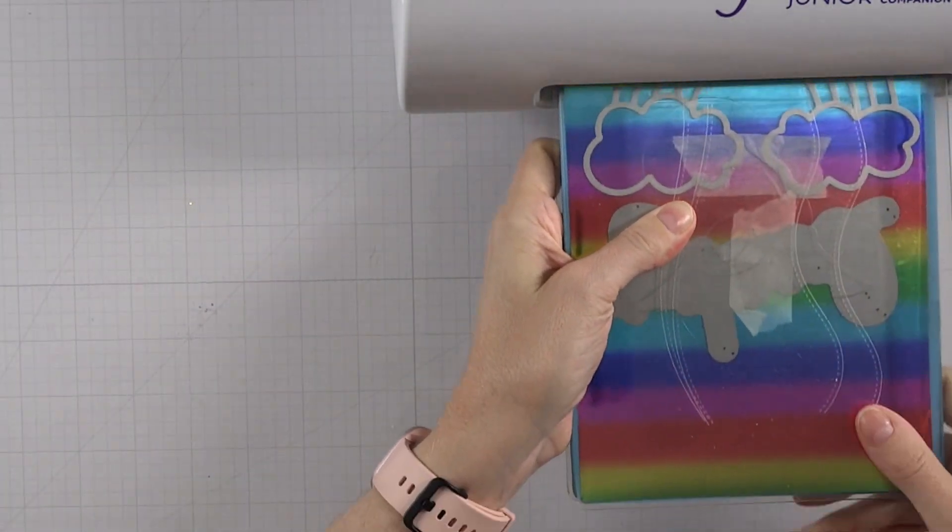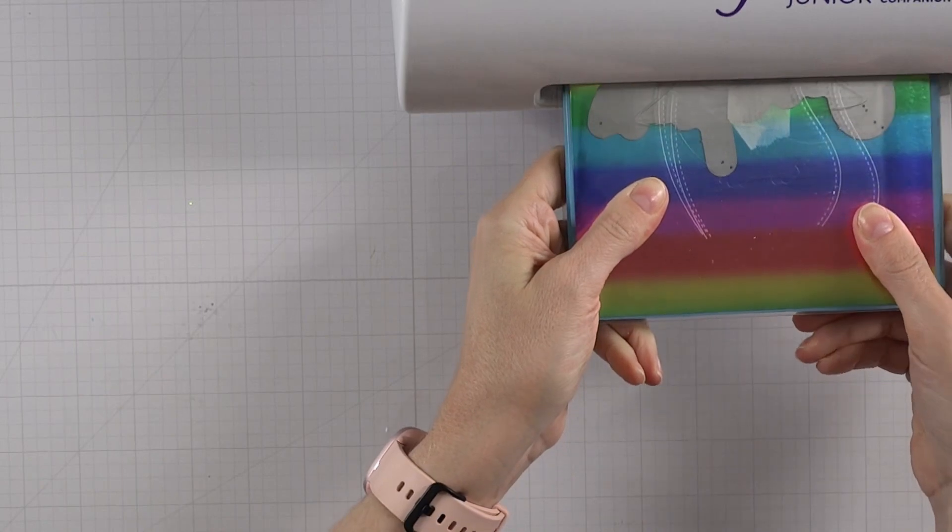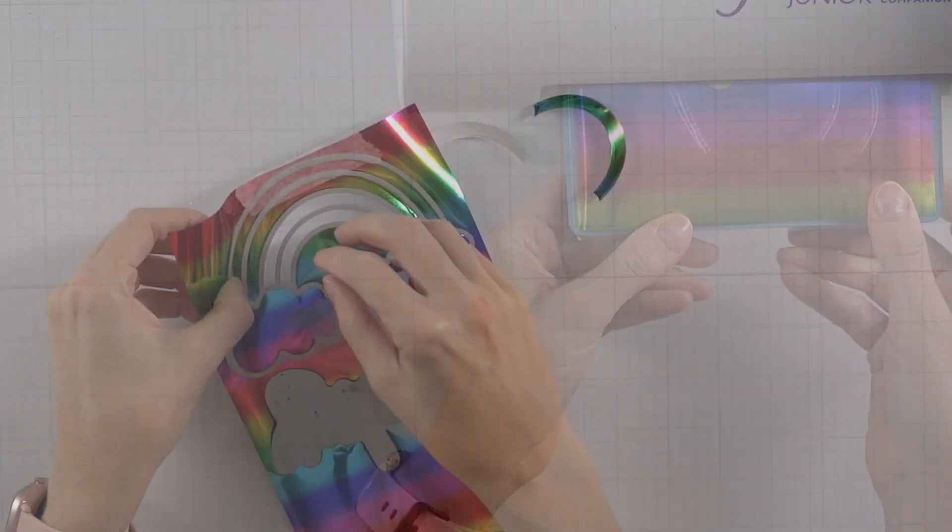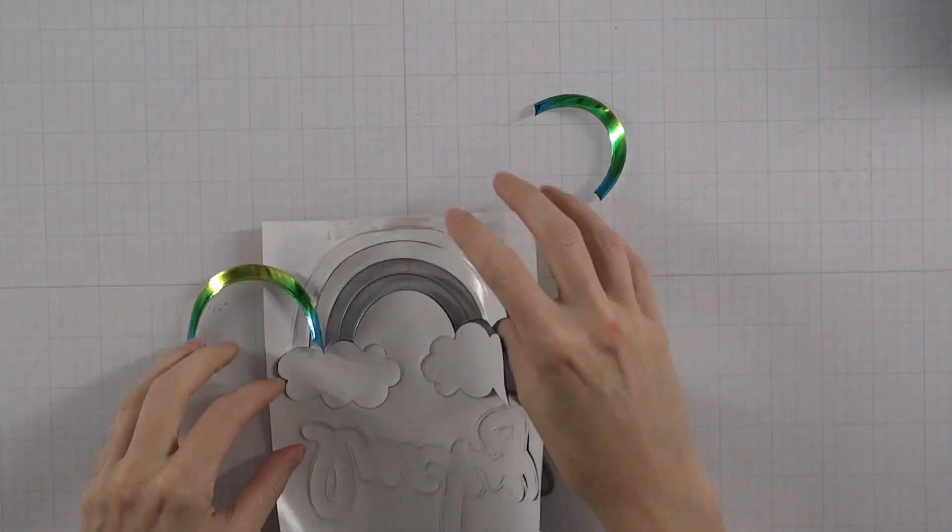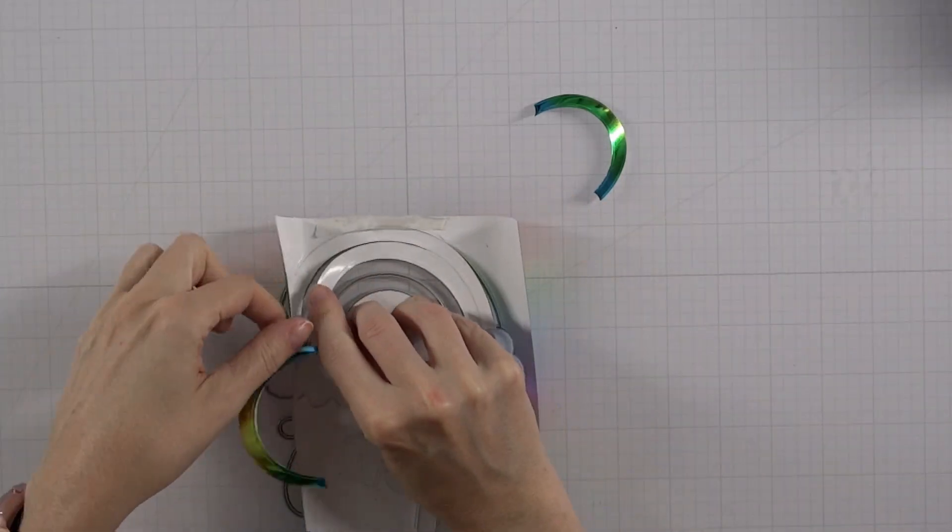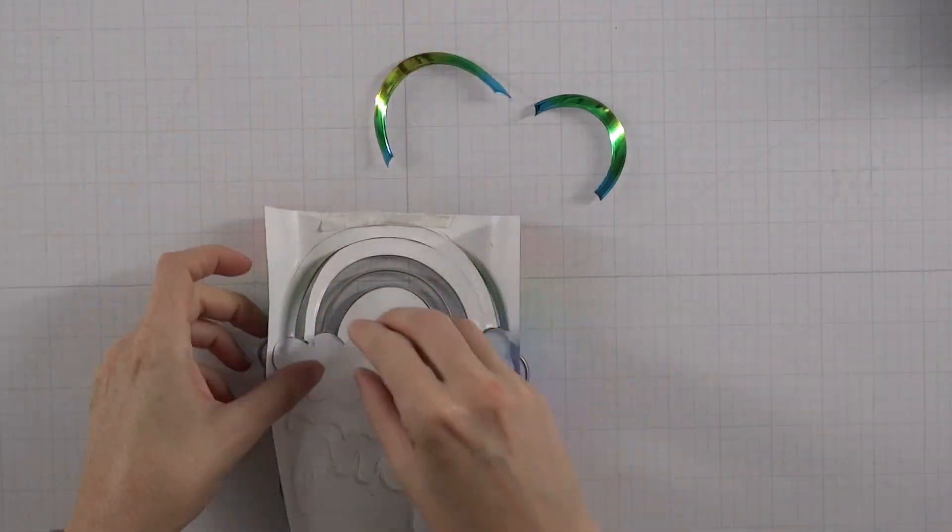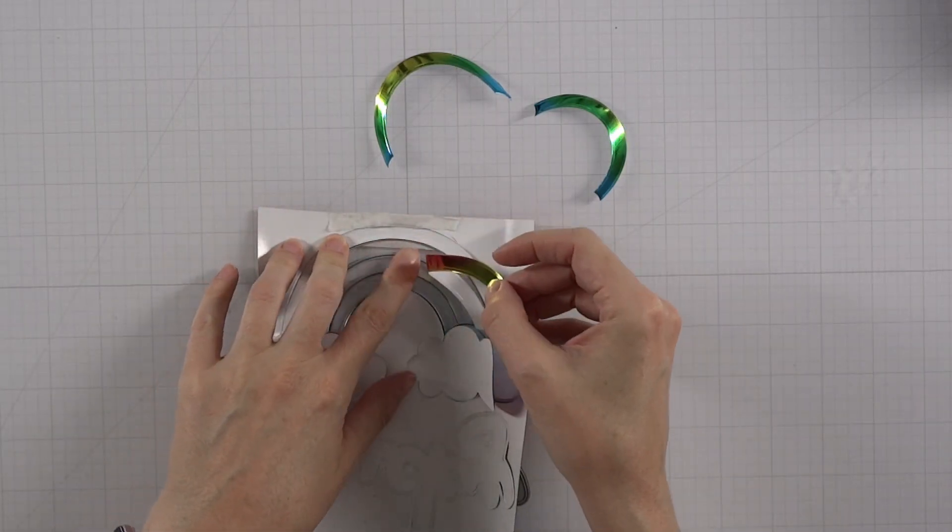I'm going to show you some tricks here to do this so it's not painstaking, which being honest it was for me in the beginning until I figured out this trick. I'm going to run this through my die cutting machine and now I'm going to get these pieces coming off here.